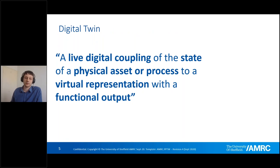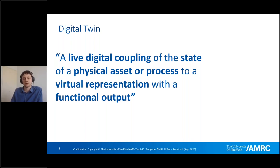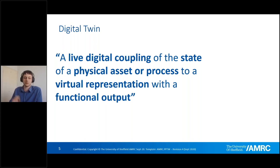The AMRC and HVMC definition of a Digital Twin is: a live digital coupling of the state of a physical asset or process to a virtual representation with a functional output. It's quite a lot of words, and that's because those six parts are the requirements of the Digital Twin, and this is how we want to break it out. The next few slides will go into the details, and as the poll said, you want to understand the requirements — that's what this section is all about.